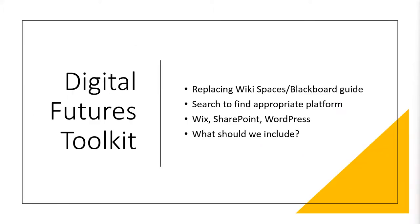To do this we were looking at training and support guides, and this is where the toolkit came into place. At the time we needed to replace a wiki space — a Blackboard guide — because the wiki spaces were going to expire and no longer be available, so we needed to transfer that information into another appropriate form.